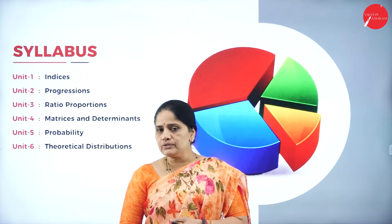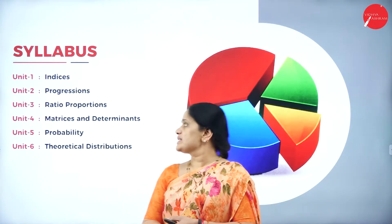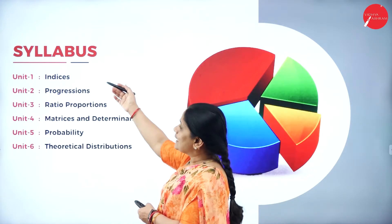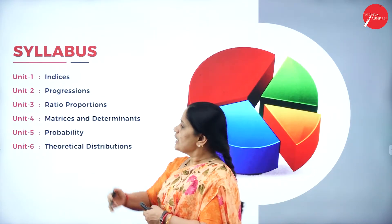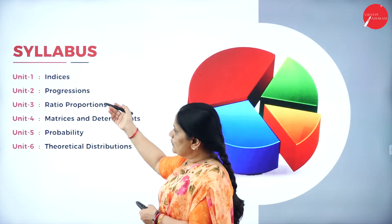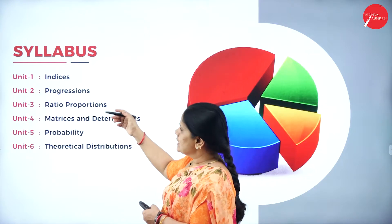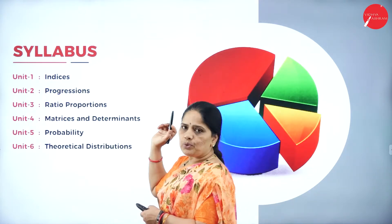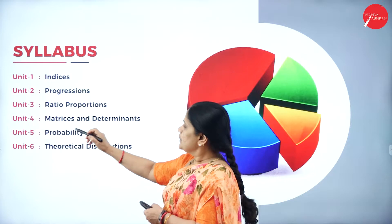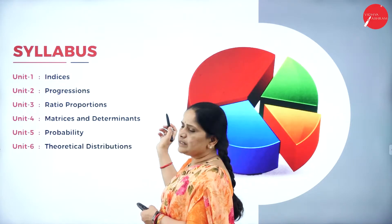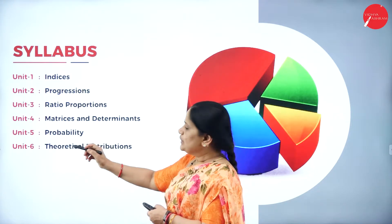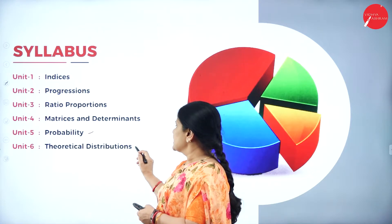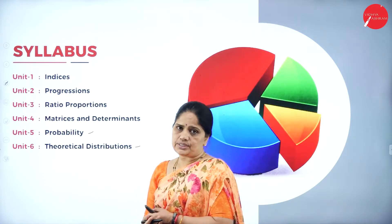Let us have a look into the syllabus. In unit 1, it deals with indices; unit 2 deals with progressions; unit 3 deals with ratio and proportions; unit 4 matrices and determinants; unit 5 probability; and unit 6 theoretical distributions.